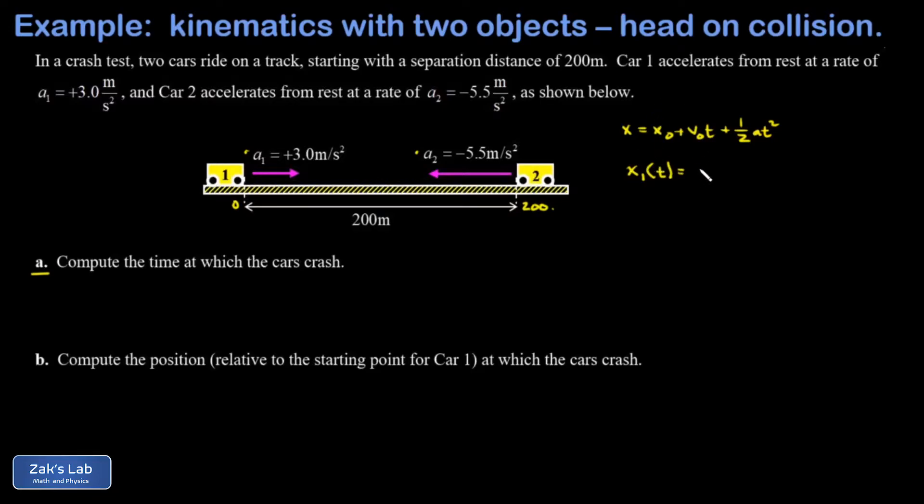That's given by the initial position which is zero, plus the initial velocity times time which is zero times t, plus one-half times the acceleration times the square of the time. Those first two terms are gone and that three-half simplifies to 1.5. Now I can describe the position of car number one for all moments in time - it's just 1.5 times t squared.